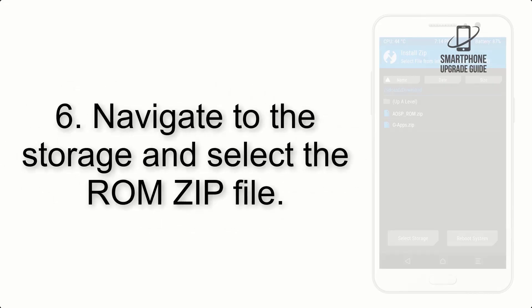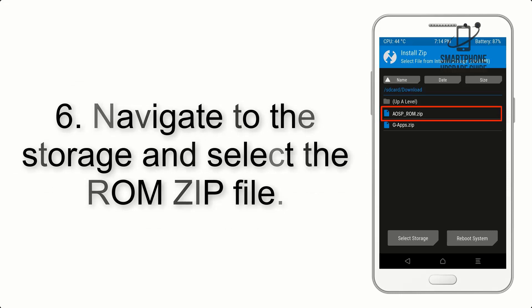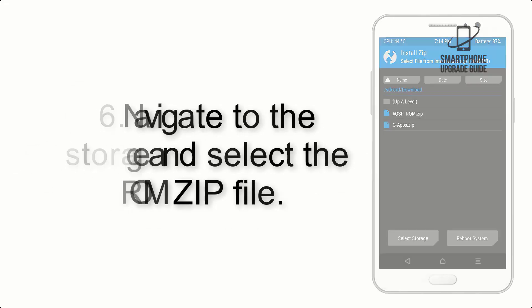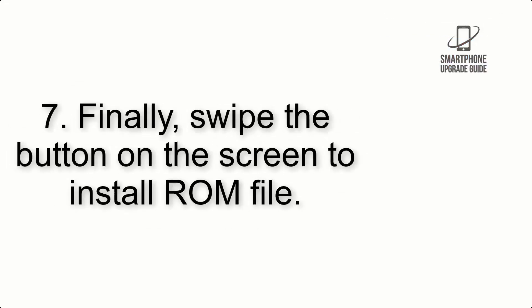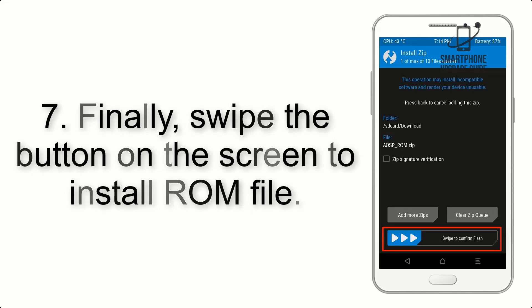Step 6: Navigate to the storage and select the ROM ZIP file. Step 7: Finally, swipe the button on the screen to install the ROM file.